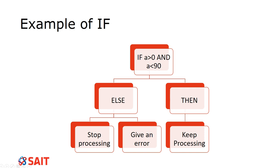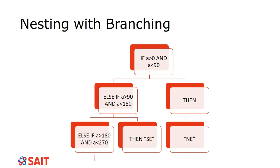With nesting, we have the if statement 'a greater than 0 AND a less than 90' — then it falls in the northeast quadrant. If it doesn't fall there, but it's between 90 and 180, then it is southeast. If not there, we check 180 to 270, and so on. This way you can determine which quadrant a value falls in without even thinking about it — if you were to write a program, it makes it very easy to work through.